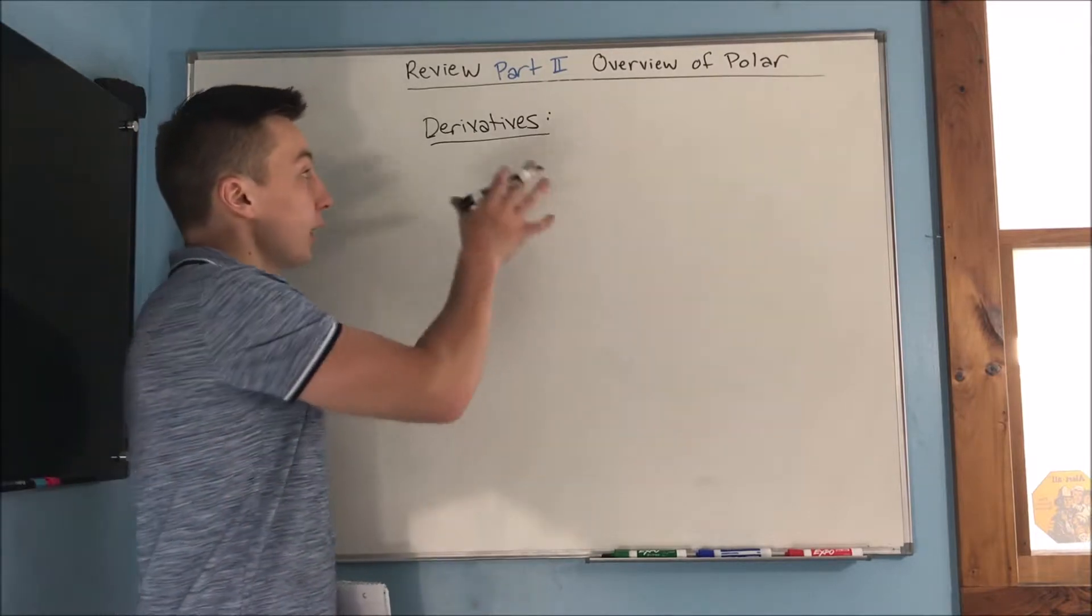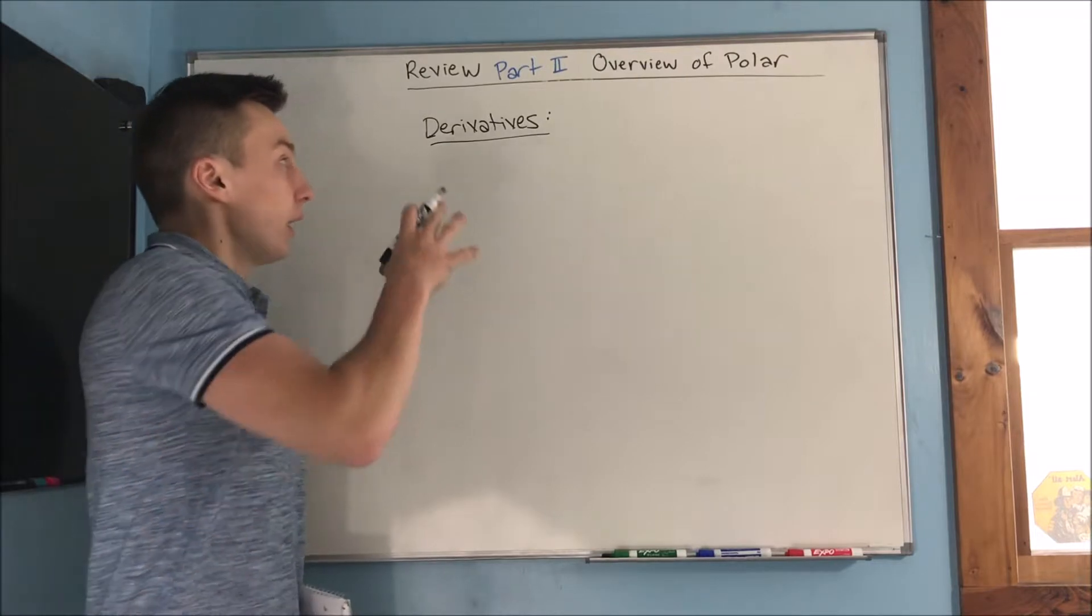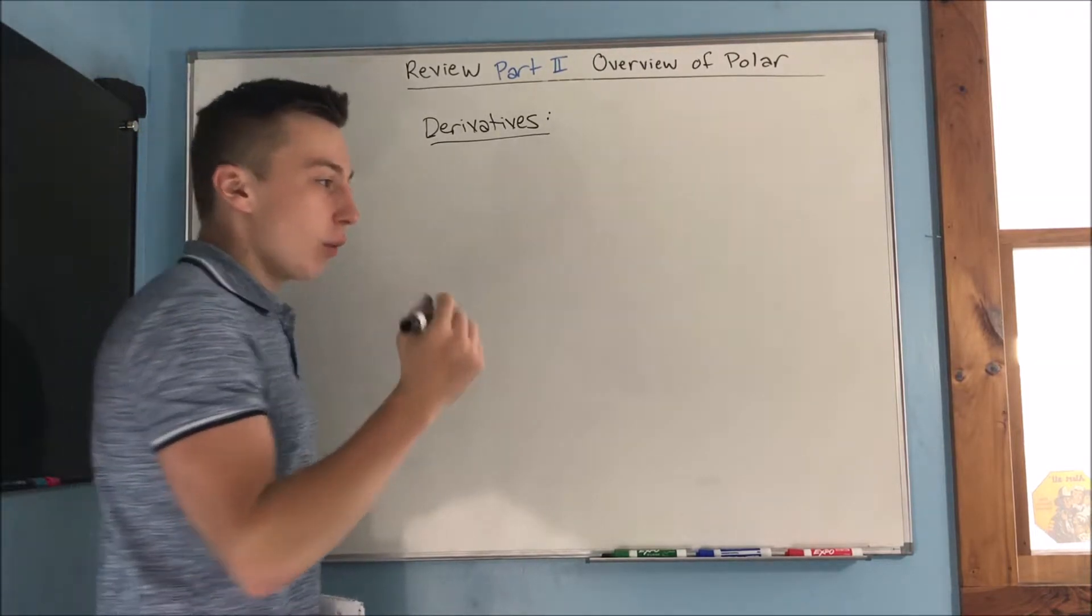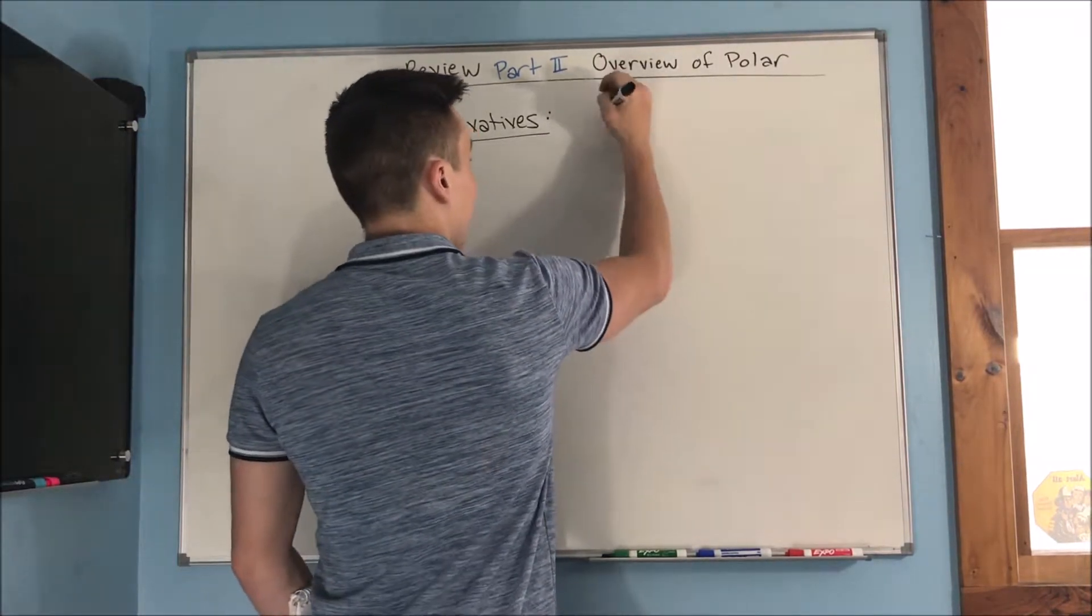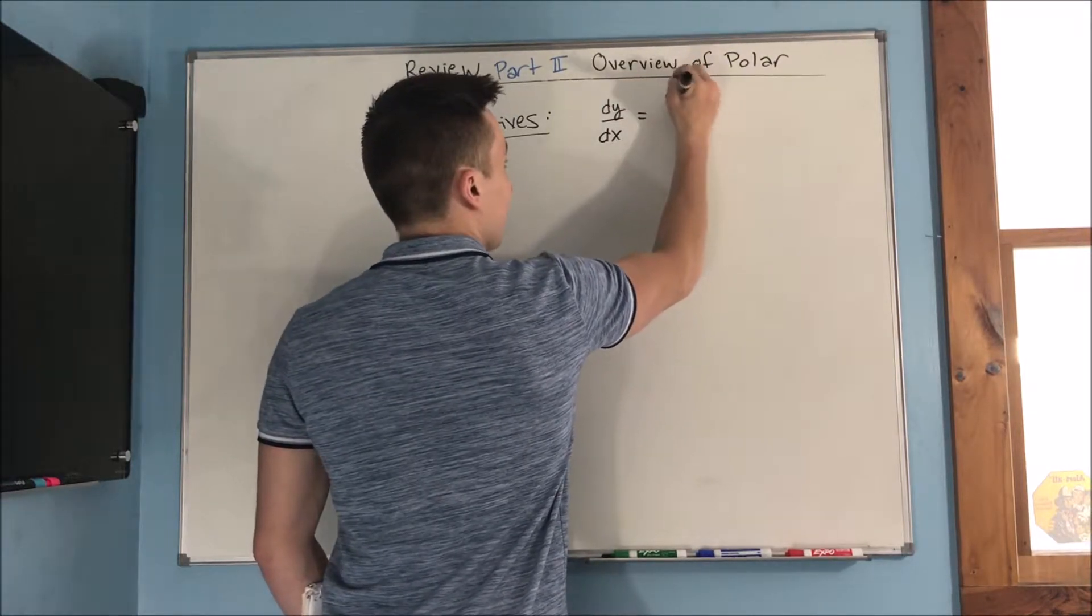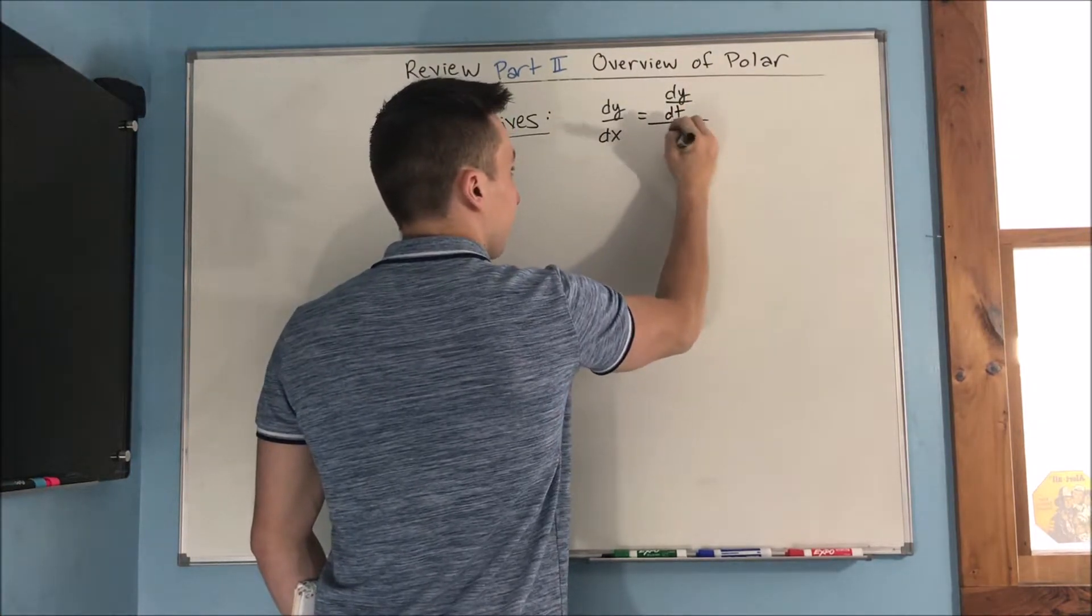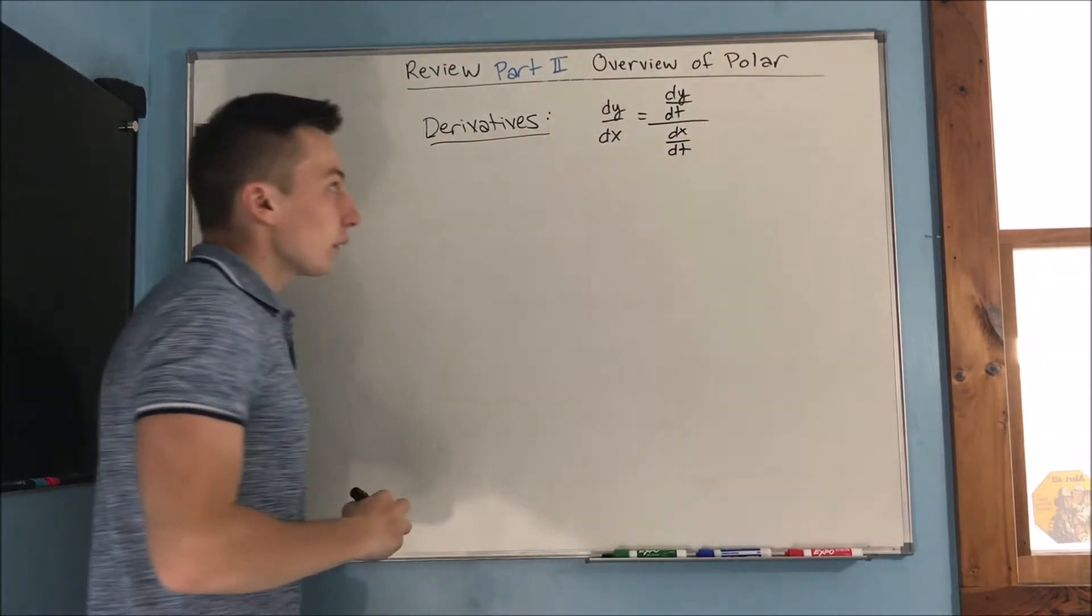Now, the next thing that we did was our calculus with polar. We did our derivatives, integrals, arc length. Now, with derivatives, we know that the derivative of parametric equations, we know that dy/dx with parametric equations is equal to dy over dt all over dx over dt.